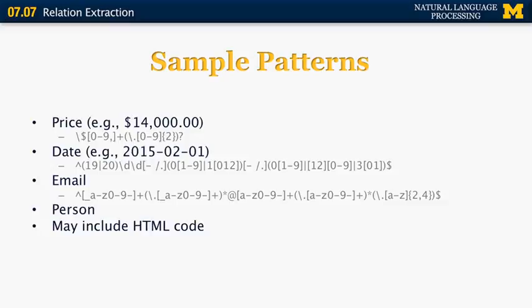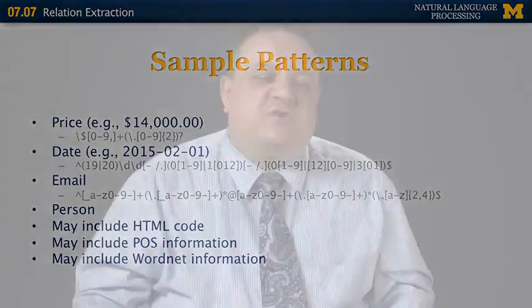To match a person, we can include things like, for example, a sequence of two words such that the first one starts with a capital letter and the second one starts with a capital letter. Obviously, this is not going to match all the persons. There are people who have three names and one name and so on. It's also possible to come up with patterns that include some HTML code so that they can be used to scrape websites, for example, to extract price information from websites like Amazon and eBay. It can also include part of speech information. For example, you may be looking for any noun followed by any adjective. And it can also include WordNet information. For example, you may be searching for a sequence so that the second word in the sequence is something that belongs to the organization subtree of WordNet. That would include things like company and newspaper.